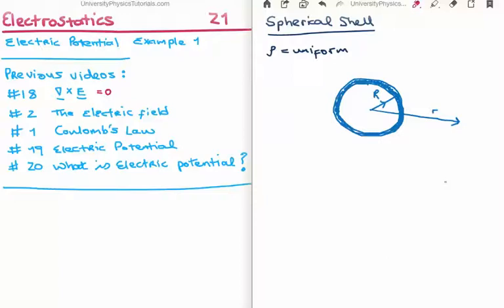There are a number of videos previous to this which are relevant. In video 18 I discussed the curl of the electric field, and we found that for electrostatics the curl is equal to 0. In video 2 I discussed the electric field, and in video 1 I discussed Coulomb's law. I introduced the electric potential in video 19, and in this particular video I showed it to be basically a mathematical convenience for us to calculate the electric field, and it didn't really suggest that it has a physical meaning. However in video 20 I discussed its physical meaning as the electric potential energy per unit charge.